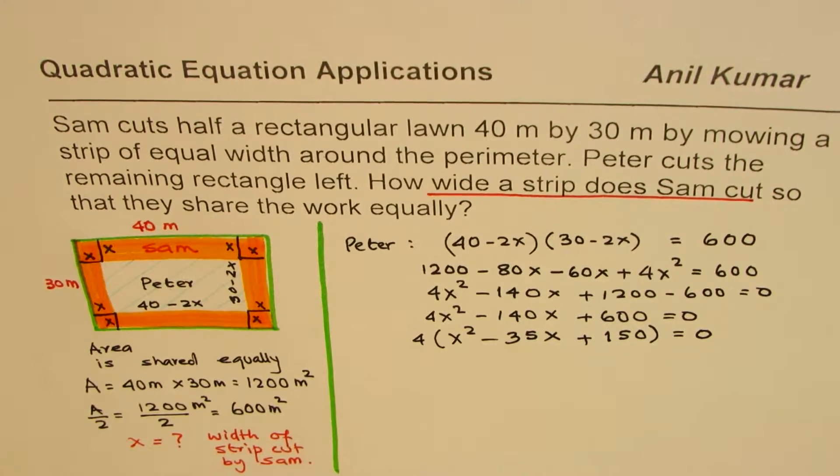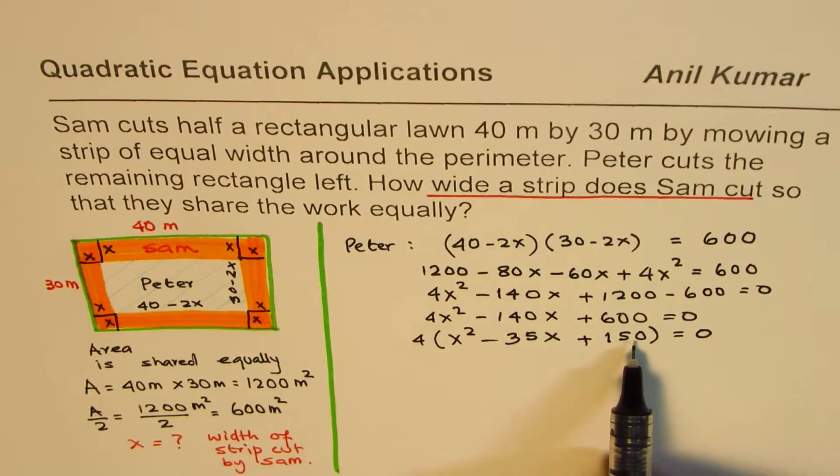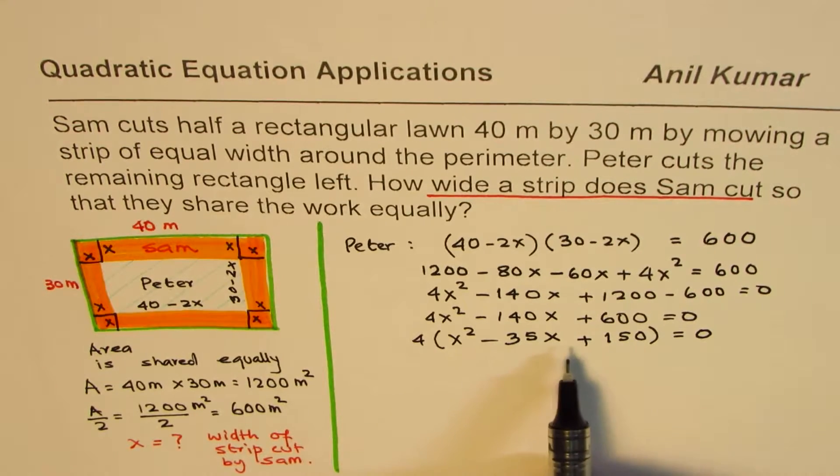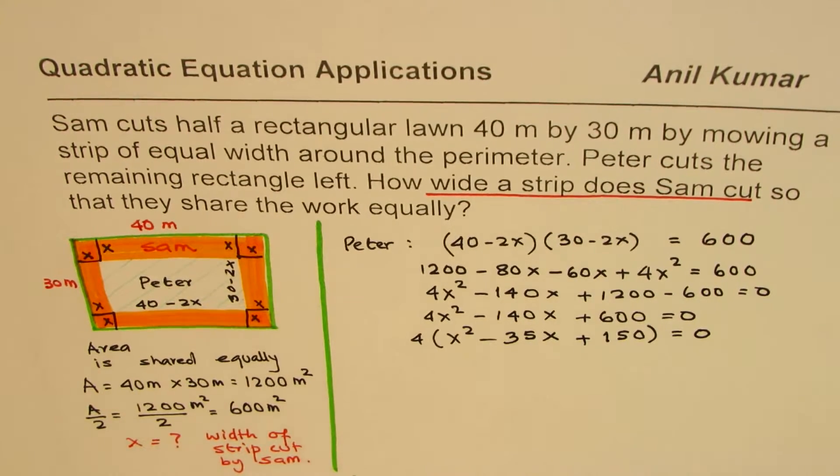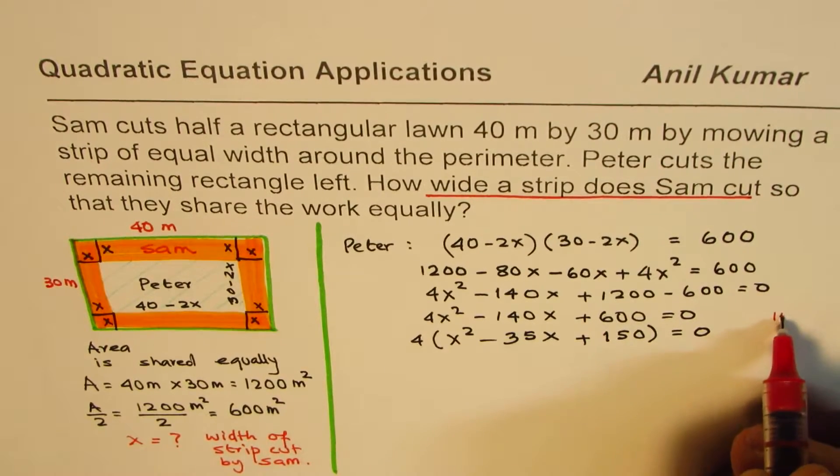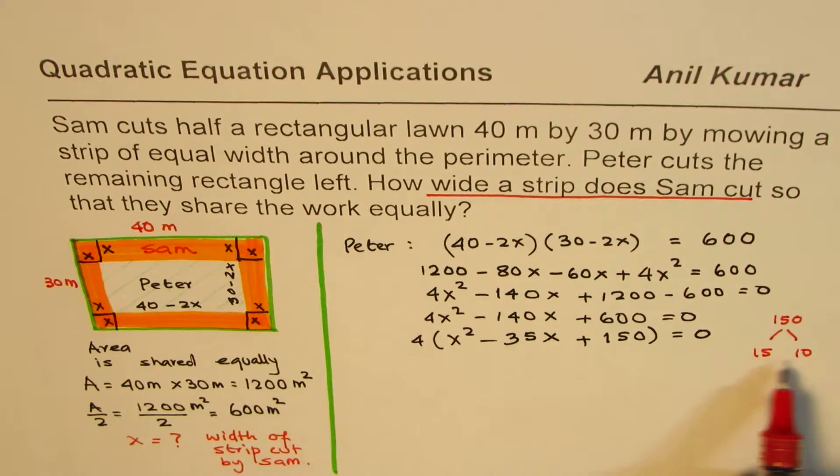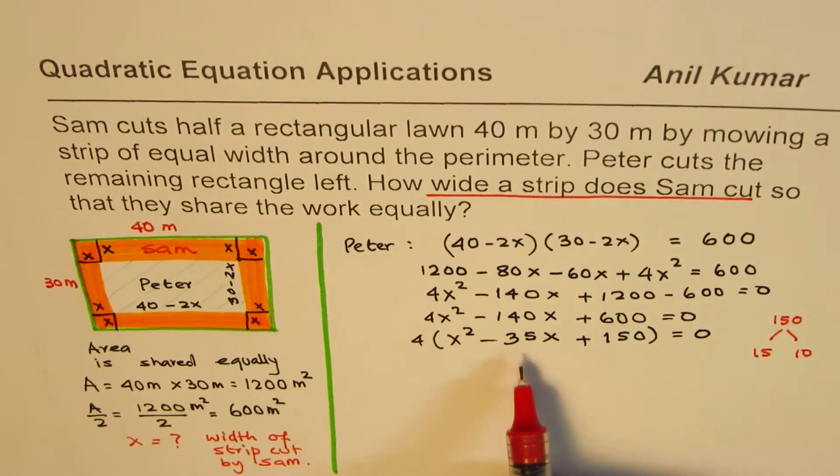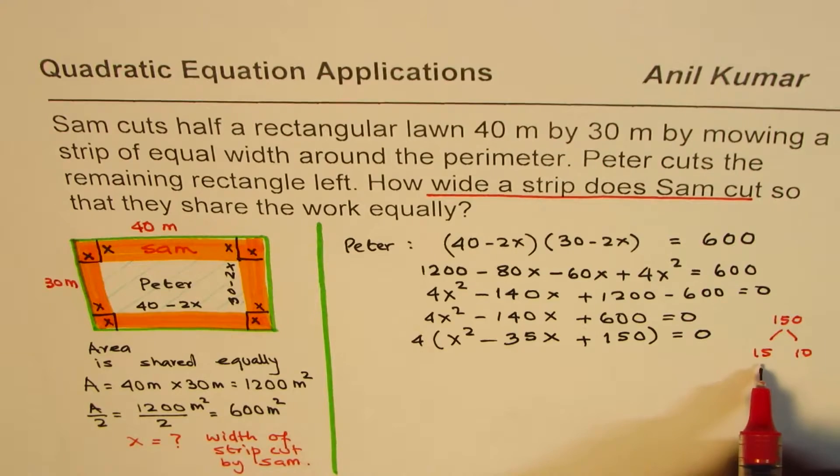Now you're looking for two numbers whose product is 150 and whose sum is minus 35. My recommendation is when you have big numbers to work with, you could use product and sum factoring. 150 has two factors, 15 and 10, but when you add them you get 25, not 35, so that doesn't work.